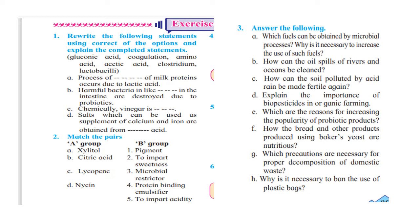Question number 1 is fill in the blank. The first blank: the process of dash of milk protein occurs due to lactic acid. The answer is coagulation. The second one: harmful bacteria in the intestine are destroyed due to probiotic. The second answer is clostridium.